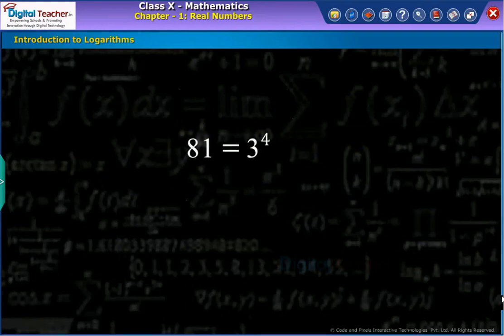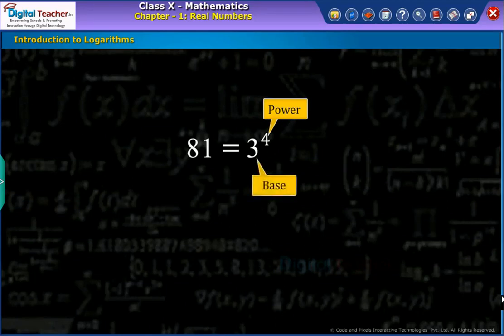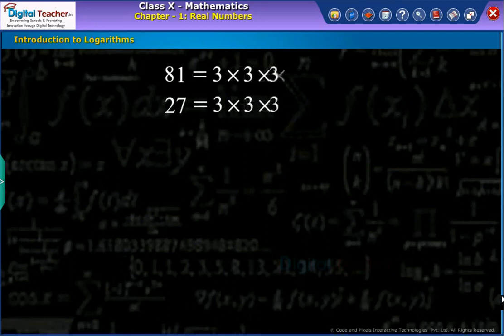For example, in the given expression 4 is called the power or exponent, 3 is called the base. We know that any composite number can be expressed as product of powers of prime numbers.